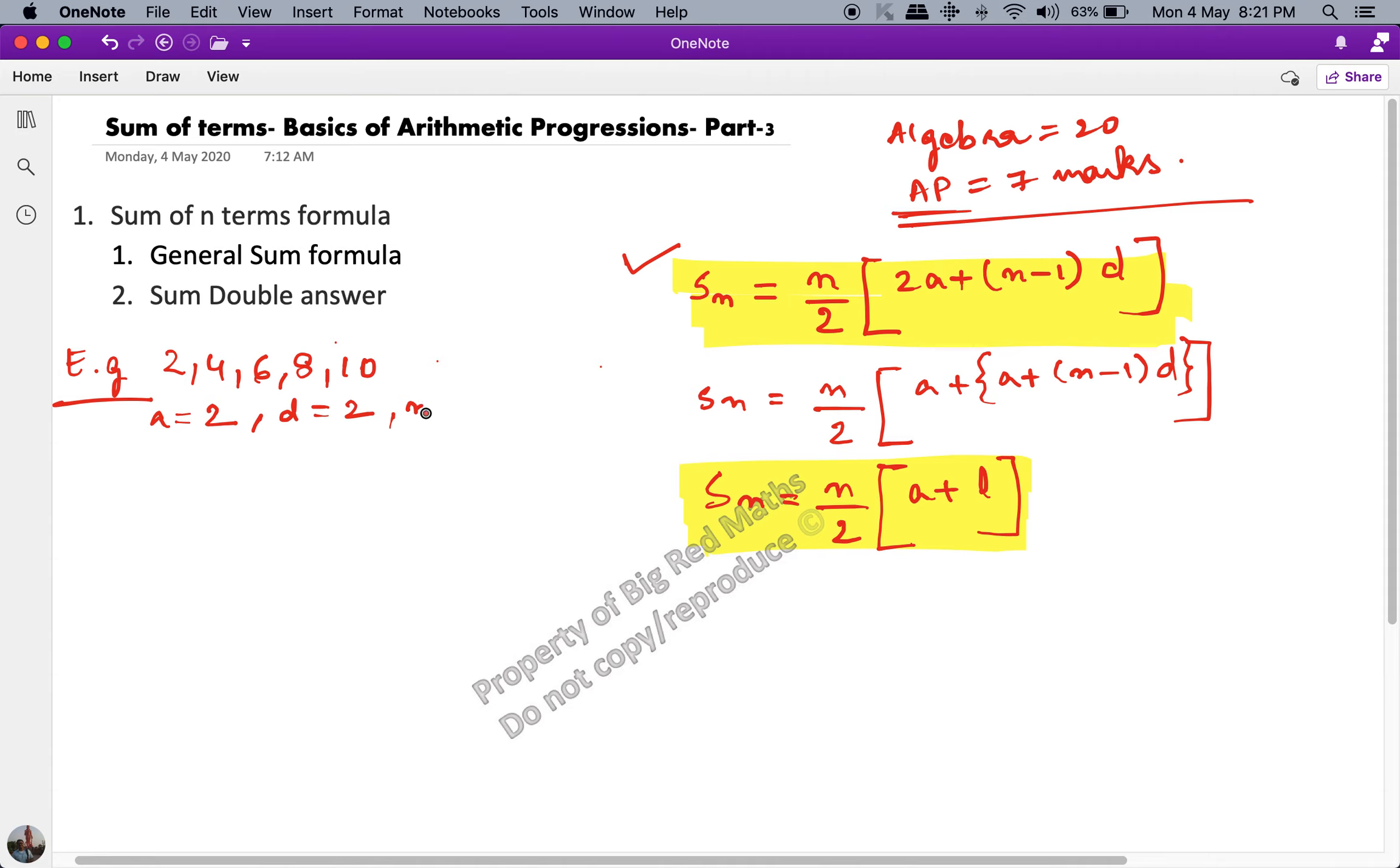Let's see how many terms are there. The value of n is equal to 5. So the sum of the first 5 terms of the AP denoted by S5 is equal to 5 upon 2, which is n by 2, multiplied by 2a which is 2 into 2 plus n minus 1 which is 5 minus 1 multiplied by d which is 2.